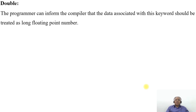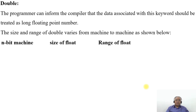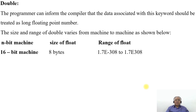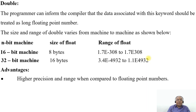Double: the programmer can inform the compiler that the data associated with this keyword should be treated as a long floating point number. The size and range of double varies from machine to machine. For a 16-bit machine, the size of double is 8 bytes, and the range is 1.7 × 10^-308 to 1.7 × 10^308. For a 32-bit machine, the size is 16 bytes, and the range is up to 3.4 × 10^4932. One of the advantages is higher precision and range when compared to floating point numbers.